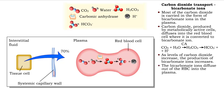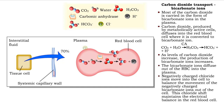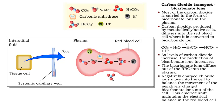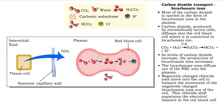The bicarbonate ion diffuses into the plasma, where it is carried to the lungs. In order to maintain electrical balance in the red blood cell, the movement of the negatively charged bicarbonate ions out of the cell is balanced with the movement of negatively charged chloride ions into the cell. This process is called the chloride shift.